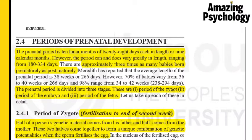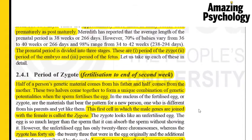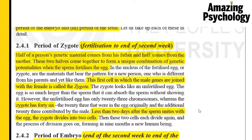The period of the zygote starts from the time of fertilization till the end of the second week. Half of the person's genetic material comes from the father and half comes from the mother. The two fuse together in a process known as fertilization, and the first cell formed after fertilization is called the zygote. The zygote has 46 chromosomes — 23 from the egg cell and 23 from the sperm cell.